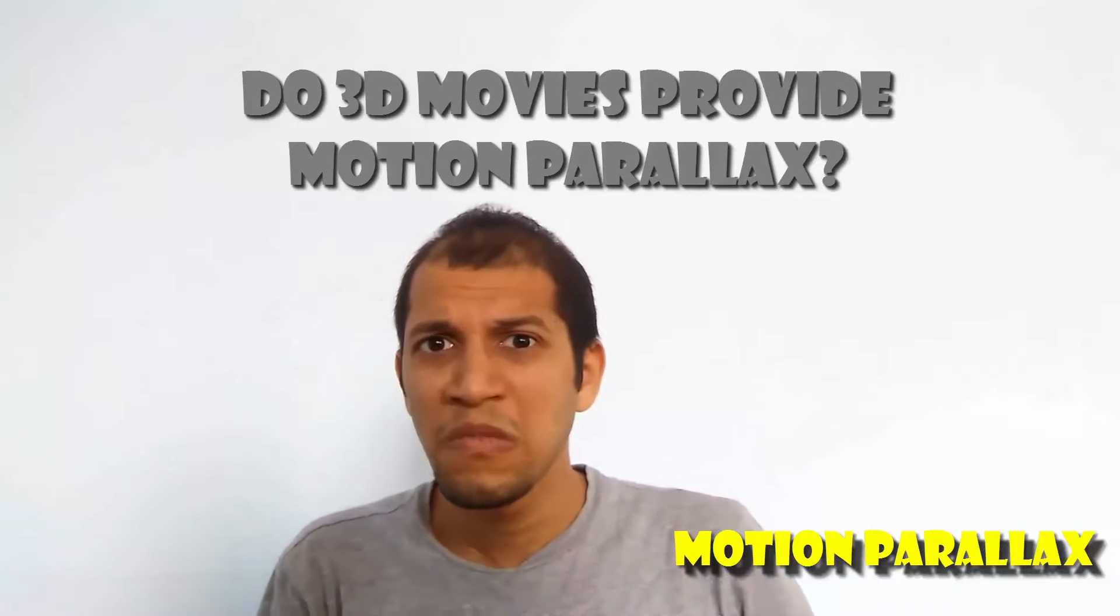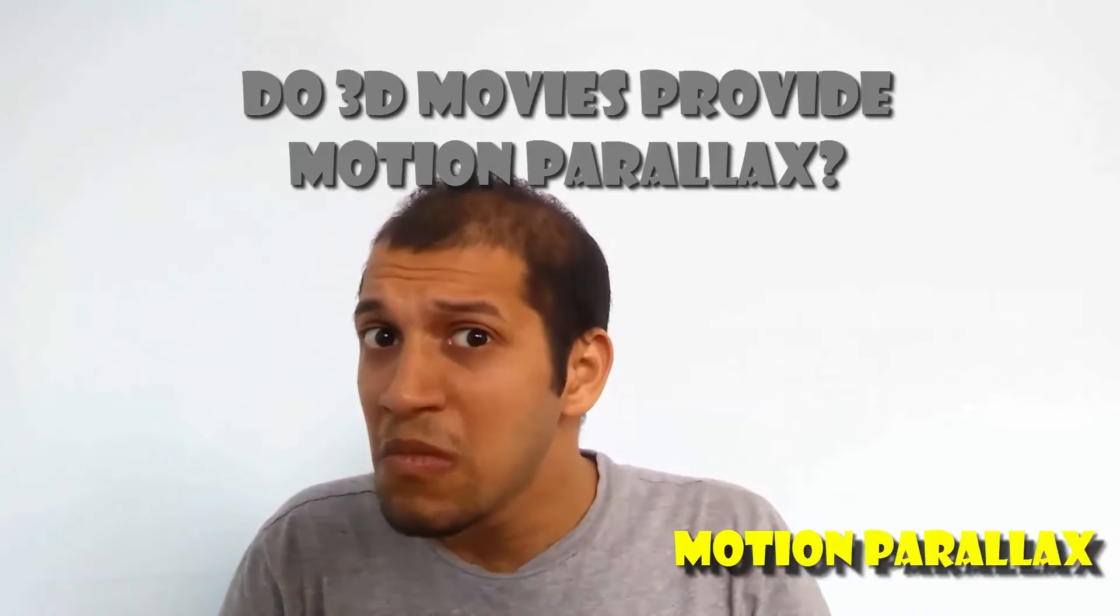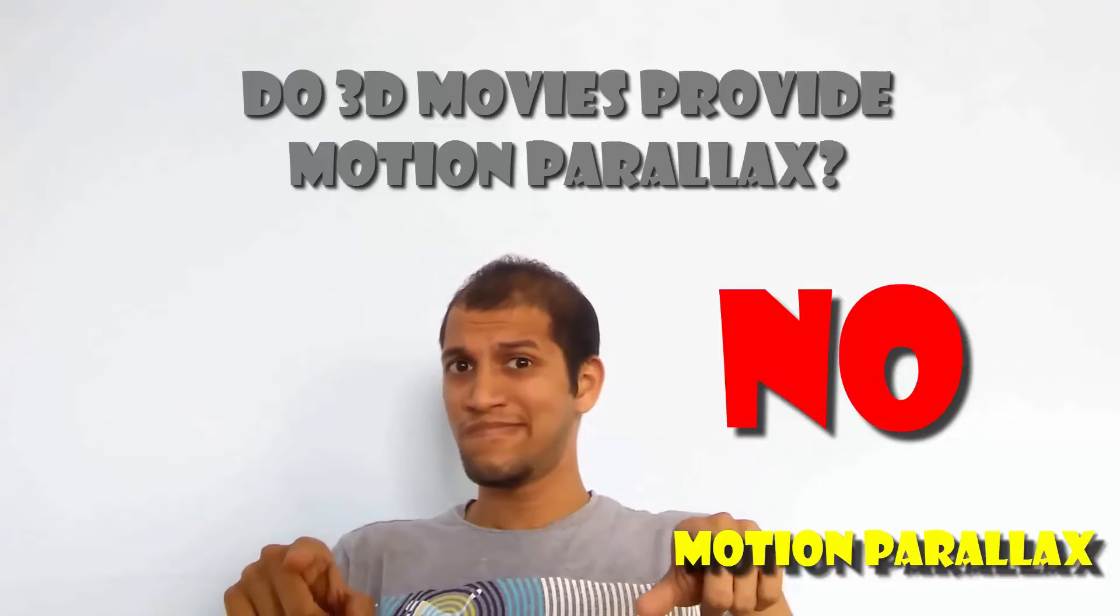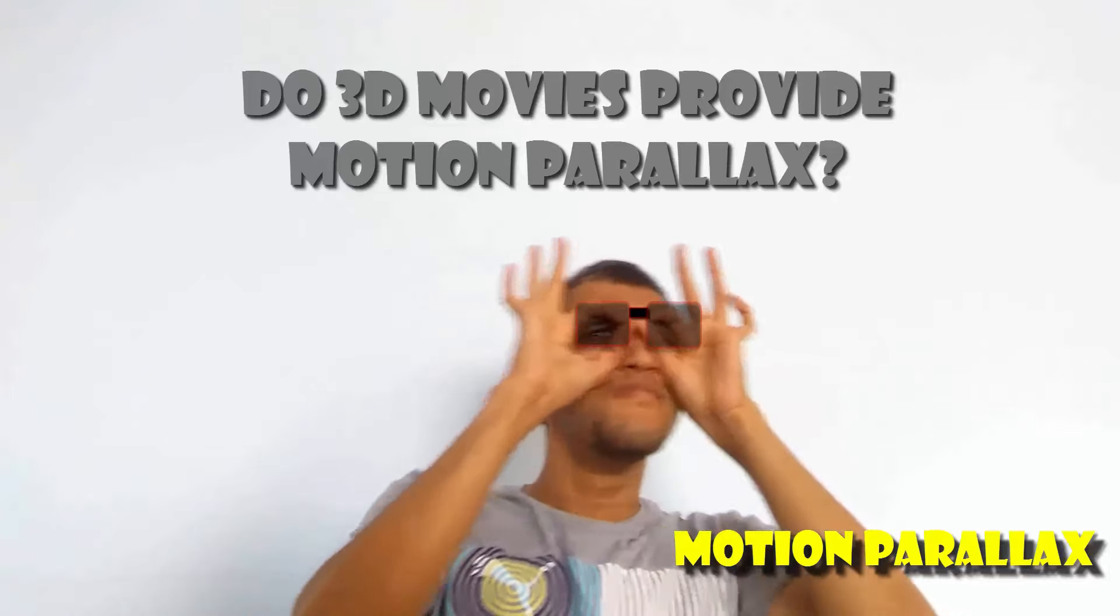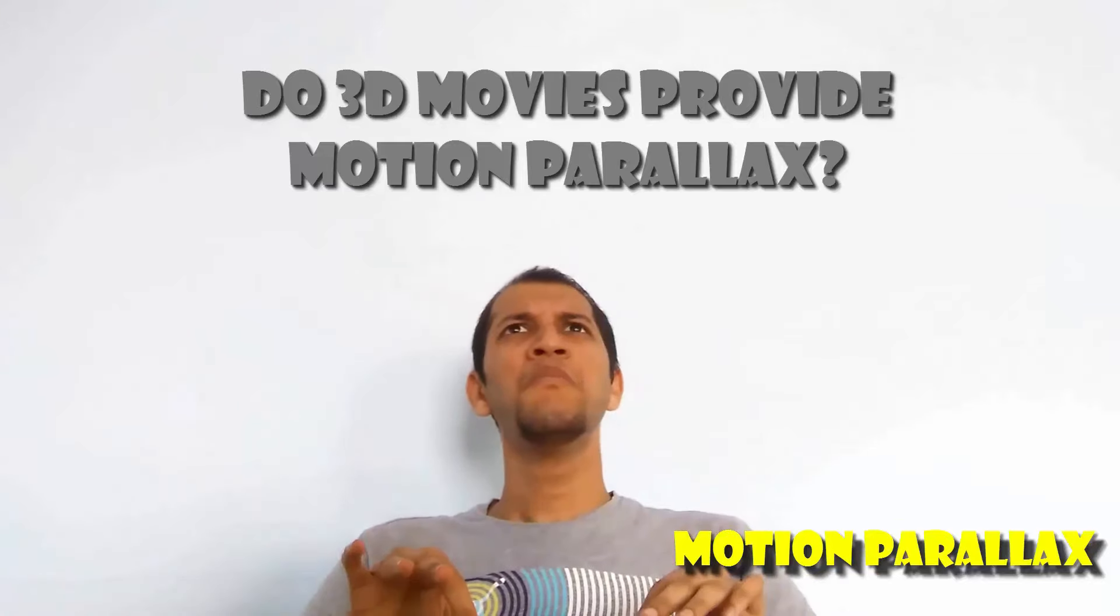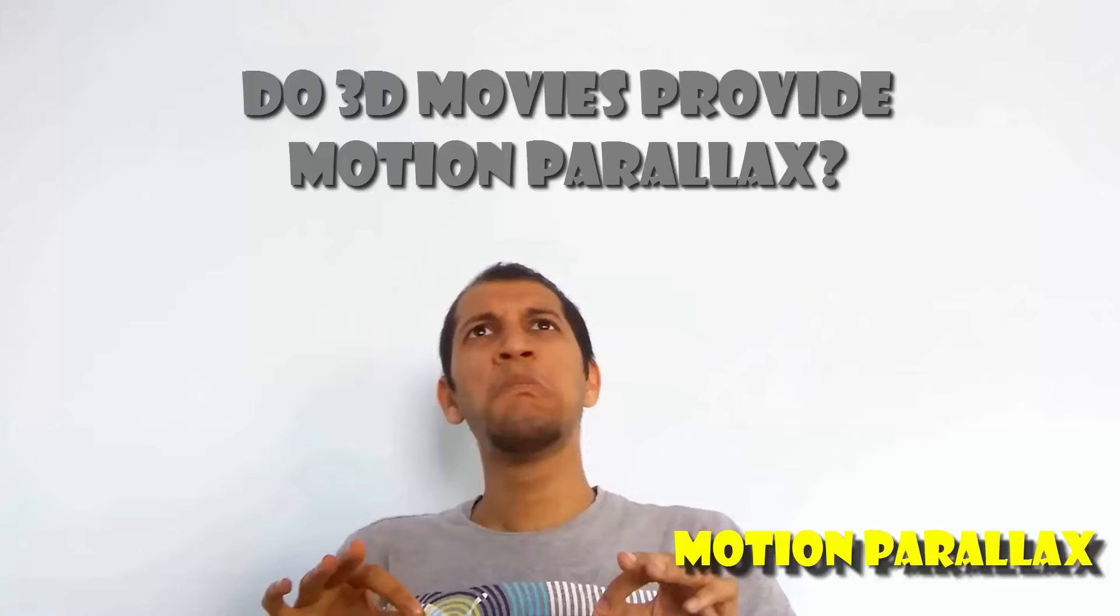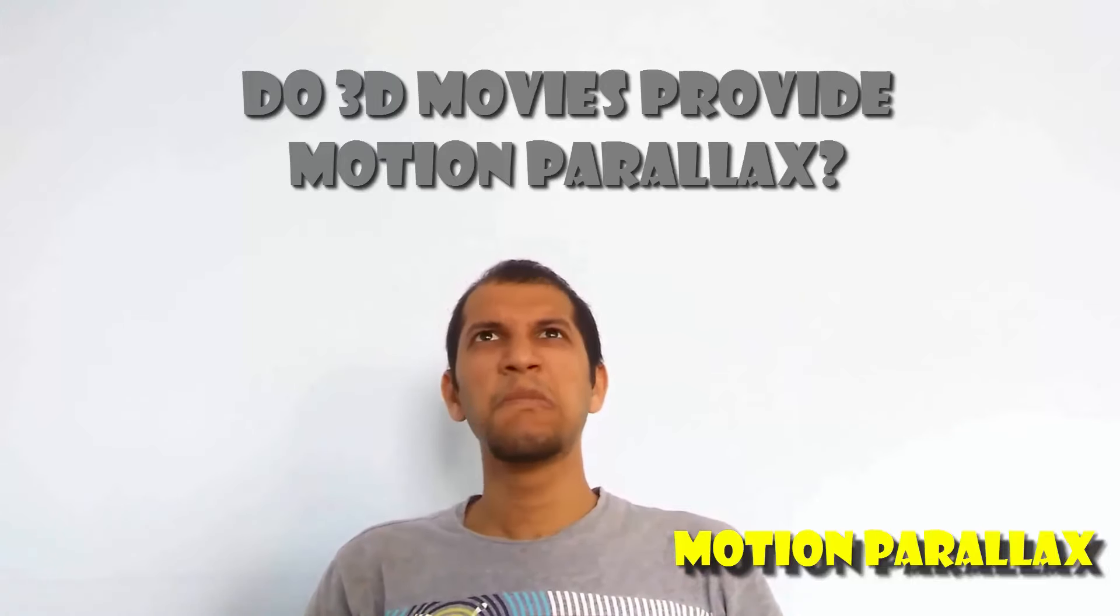So do these 3D movies provide you motion parallax? Nope, they don't. So if you could sway, you would see that the images at the back don't move slower compared to the images in the front. They move at the same rate. That is not real 3D.